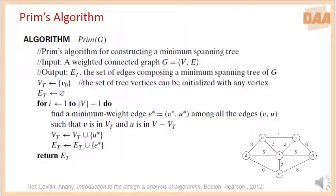The Prim's algorithm can be stated as follows. The input for this algorithm is the weighted connected graph G, represented as a set of vertices and set of edges. The output of this algorithm is minimum spanning tree represented by ET. ET is a set of edges composing a minimum spanning tree of G. As we already know, we need to start with one vertex which is arbitrarily selected. Let V0 be the vertex which is selected arbitrarily. VT represents a set of tree vertices and can be initialized with any vertex.